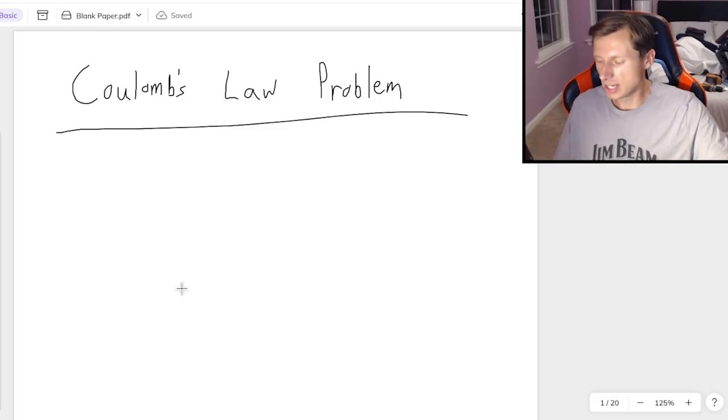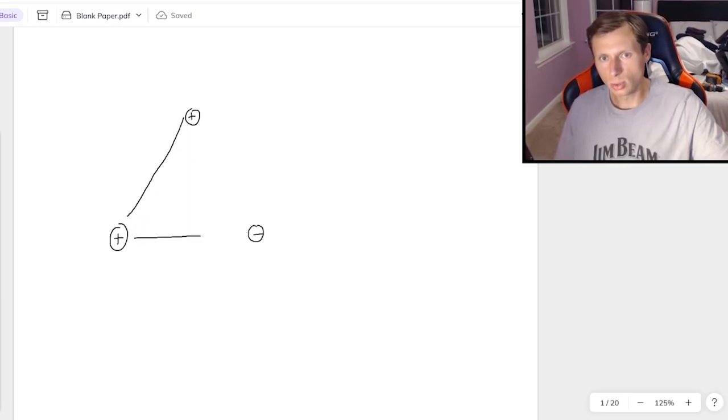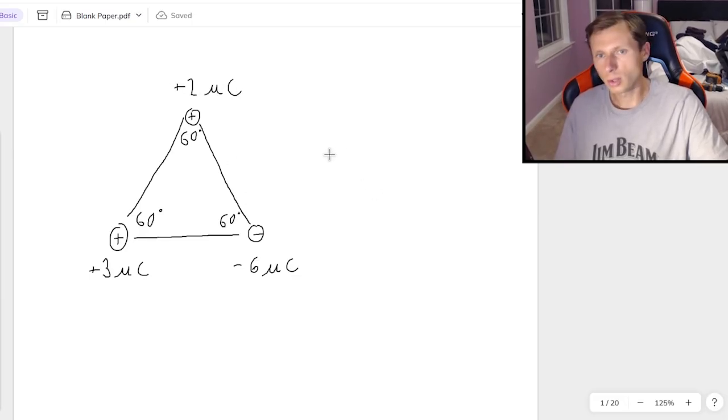So let's give the setup here. I'm going to have a positive charge here, a negative charge here, and another positive charge right here. They form an equilateral triangle, which means all these angles are 60 degrees, and you need to know that. Let's give values to these charges. This one is positive 3 microcoulombs, this one is negative 6 microcoulombs, and the one at the top is positive 2 microcoulombs.